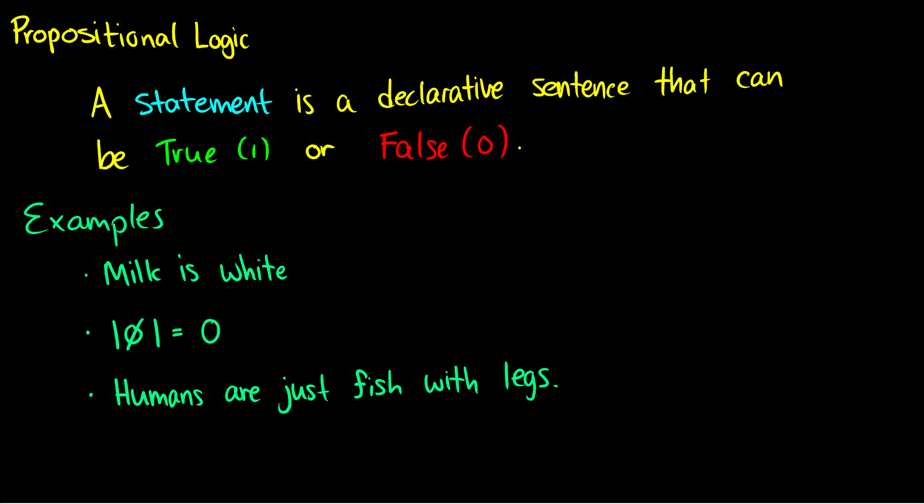A statement is a declarative sentence that can be either true or false. True is one and false is zero. This ties very closely to Boolean logic. In philosophy courses, you may see T's and F's instead of ones and zeros. I'll be defining T and F a little bit differently later, but for now, just keep true as one and false as zero in mind.